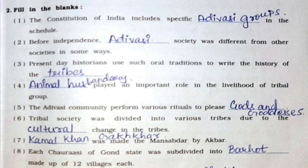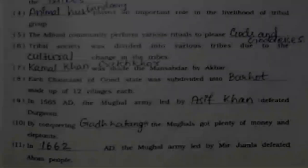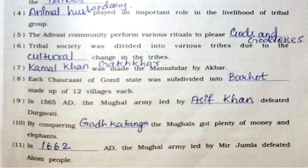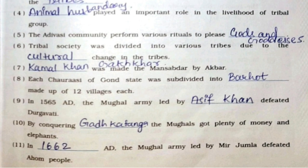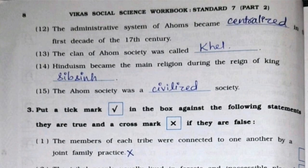Seventh: Kamal Khan was made the Mansabdar by Akbar. Eighth: Each Chaurasi of Gond state was subdivided into Barhot made up of 12 villages each. Ninth: In 1565 AD, the Mughal army led by Asif Khan defeated Durgavati. Tenth: By conquering Gadkataanga, the Mughals got plenty of money and elephants. Eleventh: In 1662 AD, the Mughal army led by Mir Jumla defeated Ahom people. Twelfth: The administrative system of Ahom became centralized in the first decade of the 17th century. Thirteenth: The clan of Ahom society was called Khel. Fourteenth: Hinduism became the main religion during the reign of king Sib Singh. Fifteenth: The Ahom society was a civilized society.